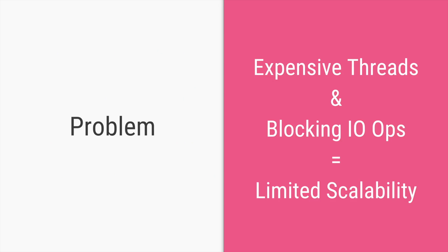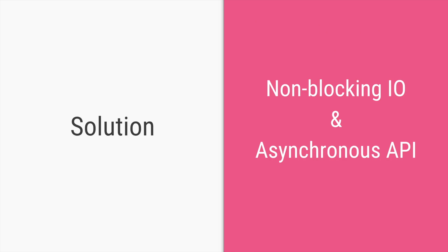The problem is: threads are expensive because they're OS threads, so you cannot have tens of thousands in an application. And when you have many IO operations, there is no option but to create more threads because each thread will go into a blocking state — you cannot reuse it. These two problems together limit the ability to scale your application. So instead of blocking you want non-blocking IO, and to enable that, instead of a synchronous API you need an asynchronous API.